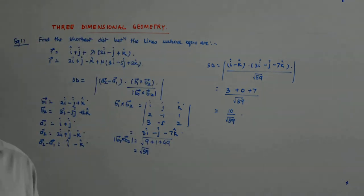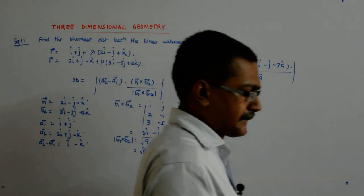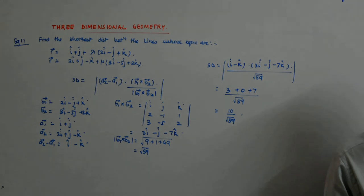Is the answer okay? So, it is 10 by root 59. Root 59 is somewhere around less than 8. So, something 1 point something.